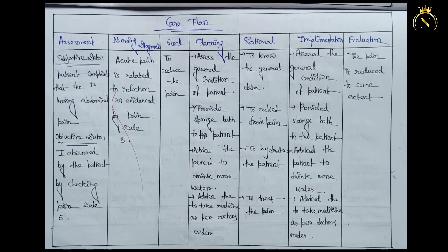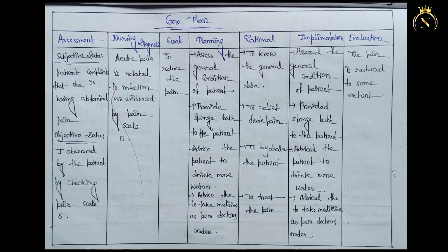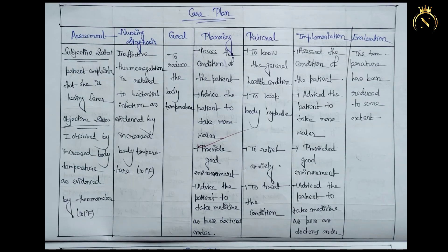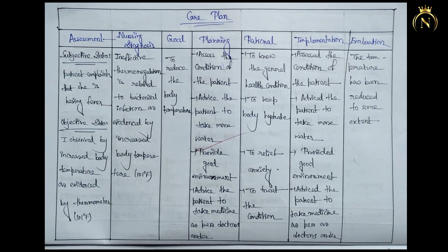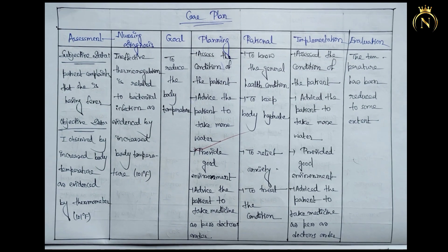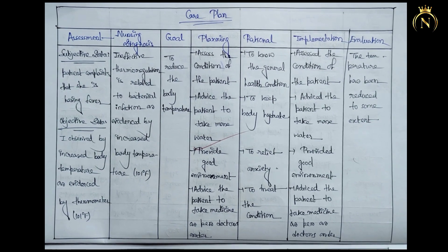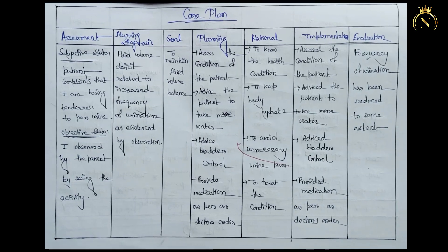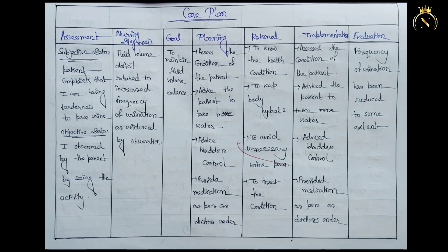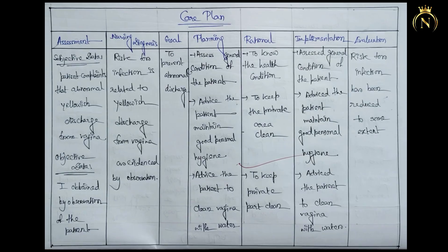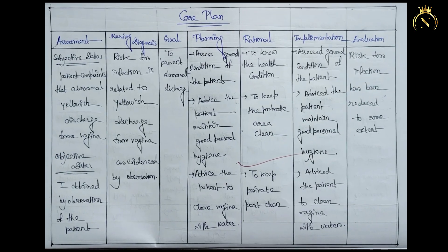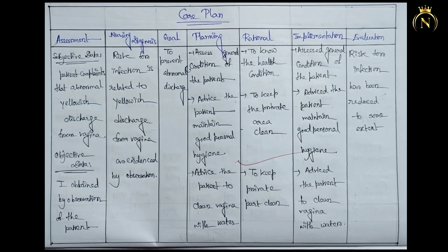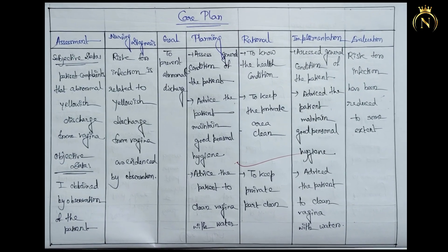According to the chief complaint, you have to mention the nursing diagnosis, and according to the nursing diagnosis you write the nursing care plan. Each care plan has six components: assessment, diagnosis, goal, planning, implementation, and evaluation. You need to write a total of four or five care plans.